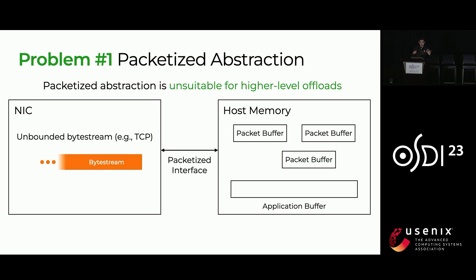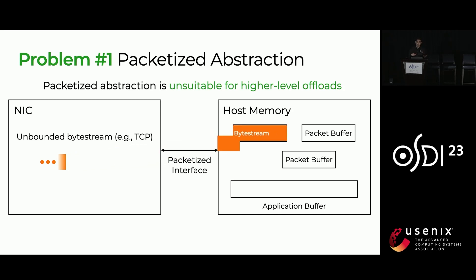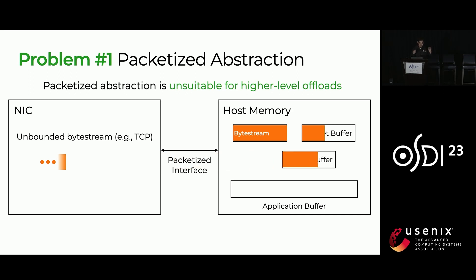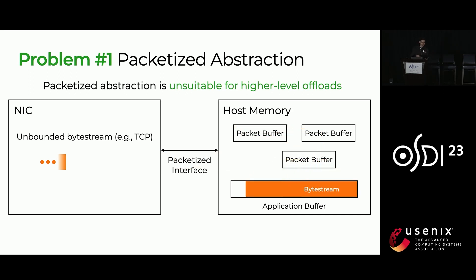And if your NIC is aware of a transfer protocol, such as TCP, that delivers a continuous byte string abstraction, there's not even a concept of boundary, and you can have more data coming at any given point. Again, software needs to recombine these pieces before delivering to the application.